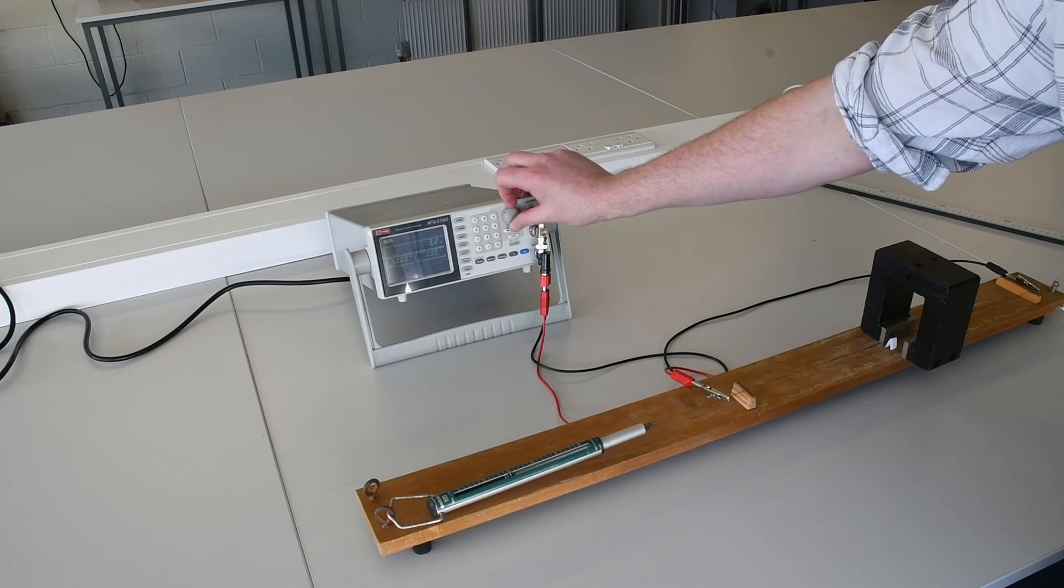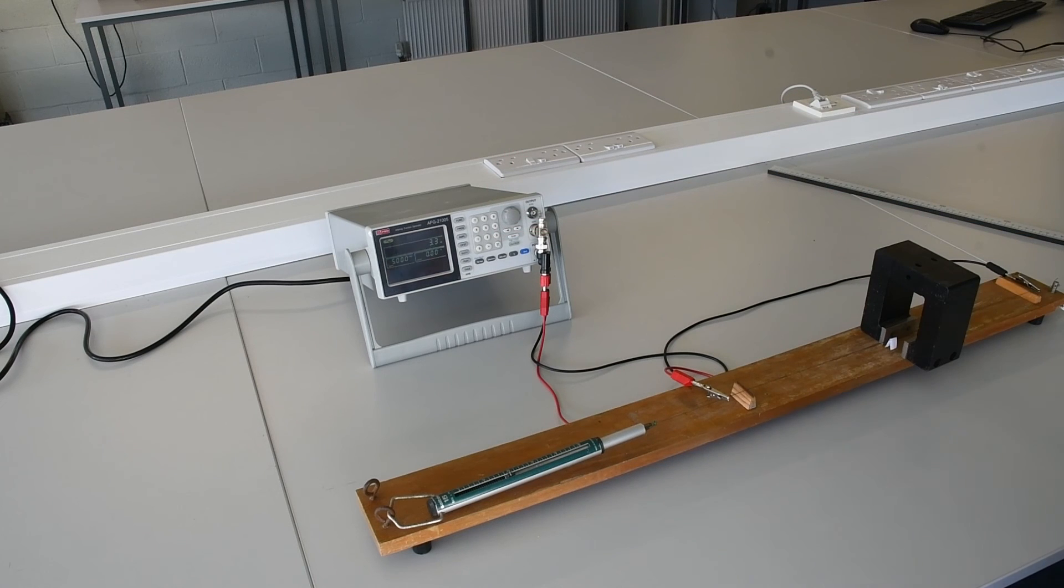Again, once we find it, I would decrease the frequency and find it again to get an average of about five measurements.